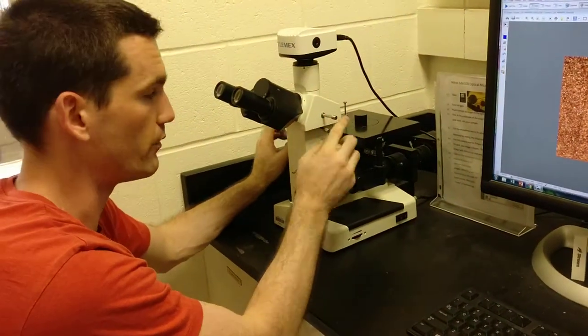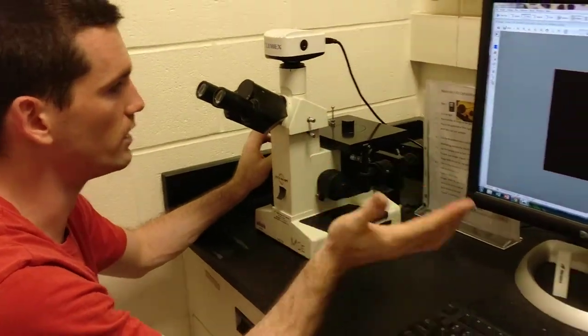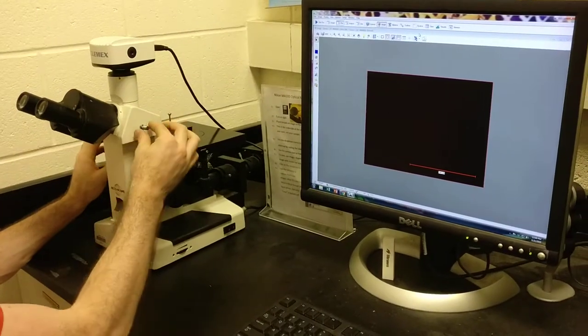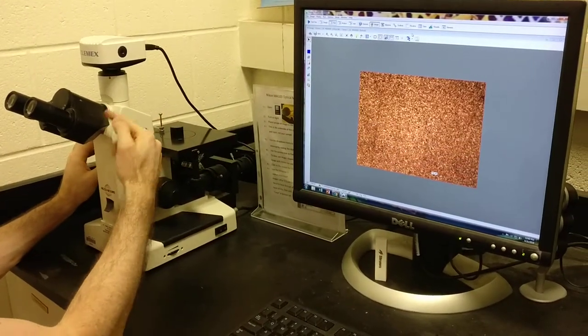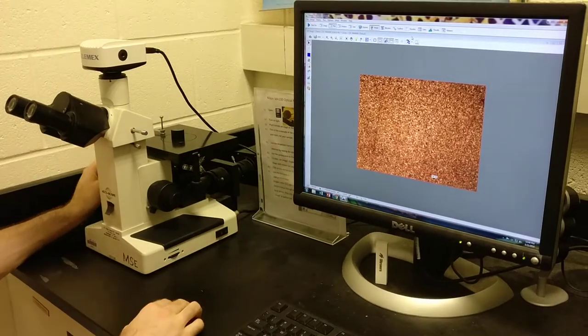We have this peg on the side which transfers it from a camera image to a binocular image. So it basically turns the light one way or the other here. So I'll make sure it's going to the computer.